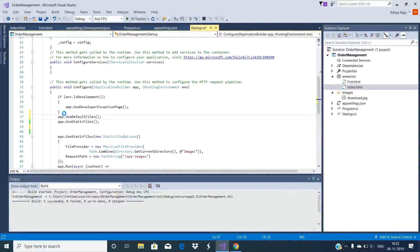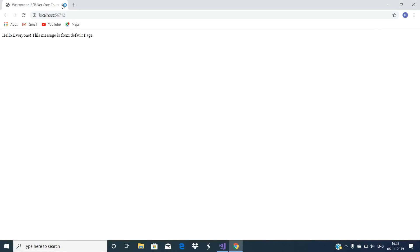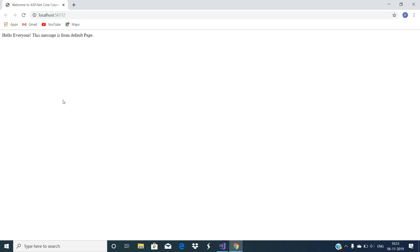Now run the application. You will see the output as expected from the index.html for this root request itself. The point to remember is that the useDefaultFiles middleware is just a URL rewriter and it never serves the static files. The job of this middleware is to simply rewrite the URL to the default file, which will then be served by the static files middleware.